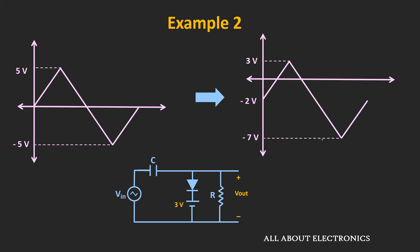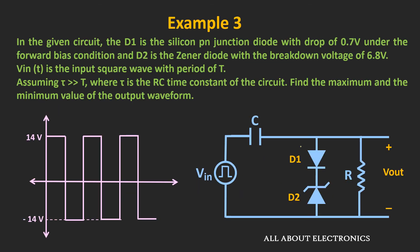Now let's move to the next example. In this example, we have been given this circuit. It is given that diode D1 is a P-N junction diode with a forward voltage drop of 0.7V, while diode D2 is a Zener diode with a breakdown voltage of 6.8V. A square wave is applied to this circuit, and we have been asked to find the maximum and the minimum value of the output waveform.